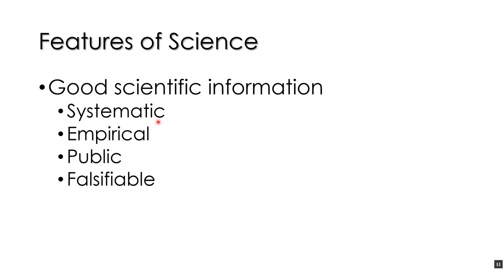Some features of good scientific information: it comes from research that is systematic — there's a procedure applied to everybody. It's empirical, meaning conclusions are made on observations. It's public, meaning those observations are available for everyone to see. If I say 'I feel bad today,' that is a private observation — you cannot see that. We're only dealing with public observations, things other people can see and agree on.